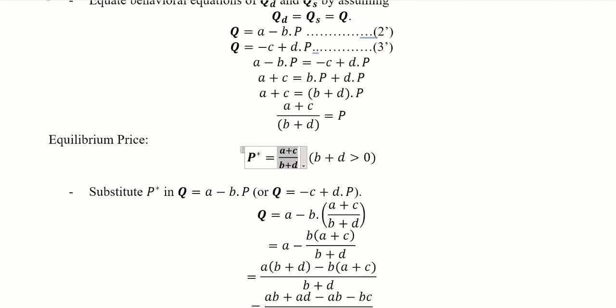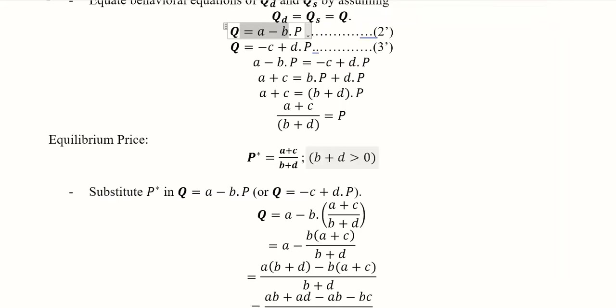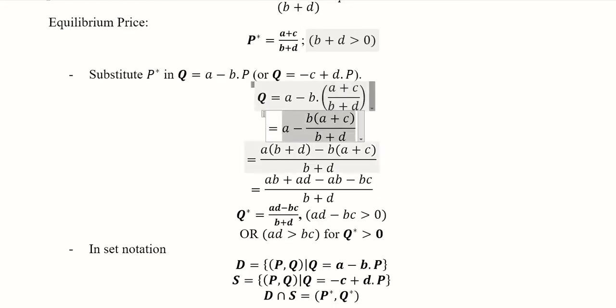Now we have the equilibrium price. The other unknown is output, and we can find that simply by substituting the equilibrium price into either of the behavioral equations. We have chosen the first equation, which is the demand equation. In place of the p variable we substitute the equilibrium price. We solve this symbolically — this is the LCM step; you can pause the video to follow this simplification.